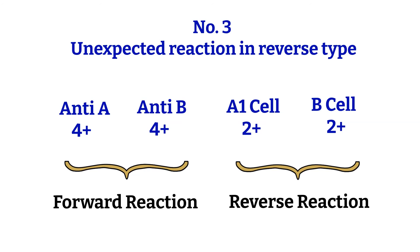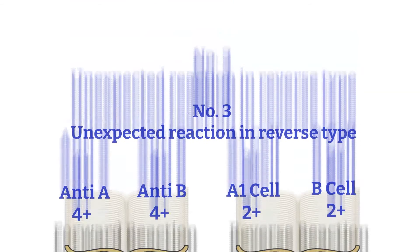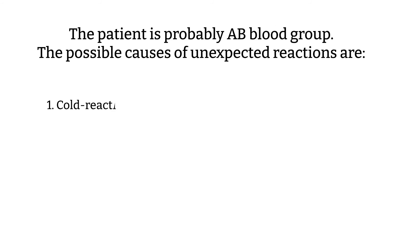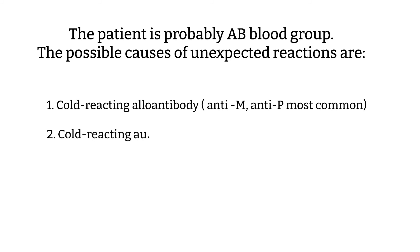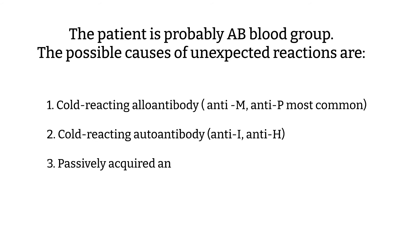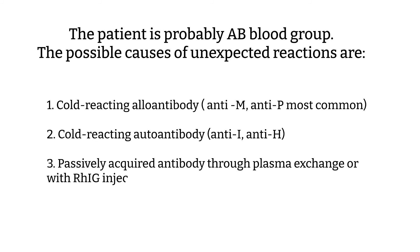This patient is probably group AB blood type with the following possibilities: 1. A cold-reacting autoantibody such as anti-M or anti-P, which is more common. 2. A cold-reacting autoantibody such as anti-I or anti-H. 3. Passively acquired antibody through plasma exchange or with RhIG injections. Or 4. It could also be Rouleaux.